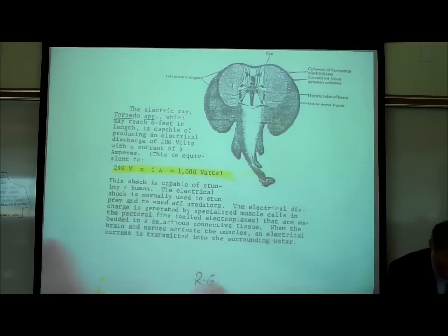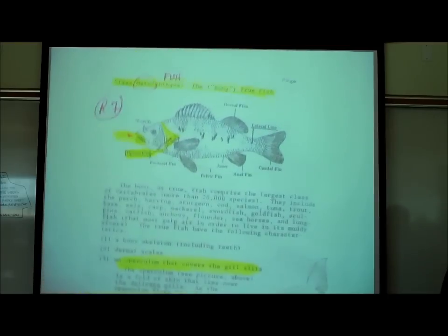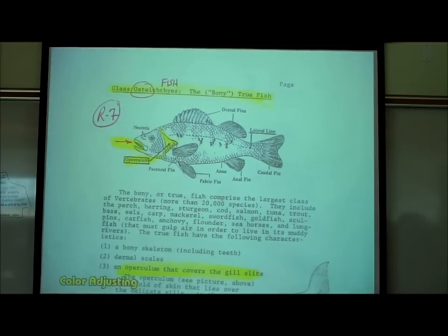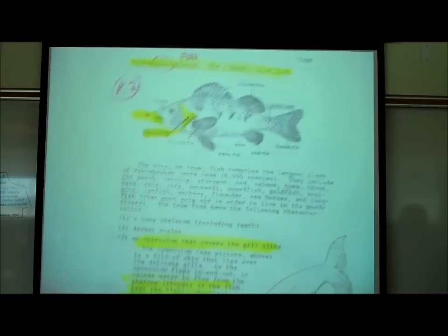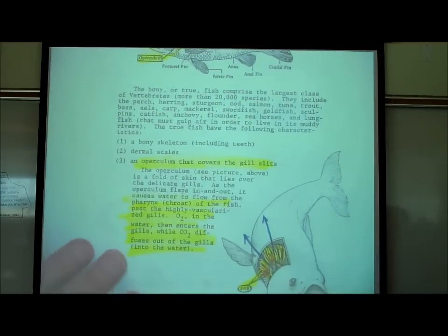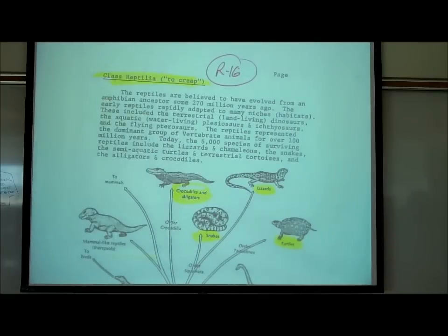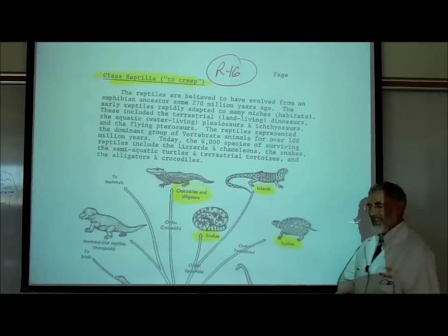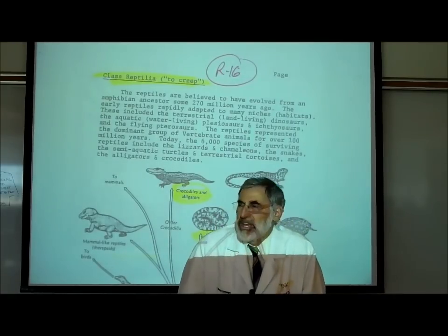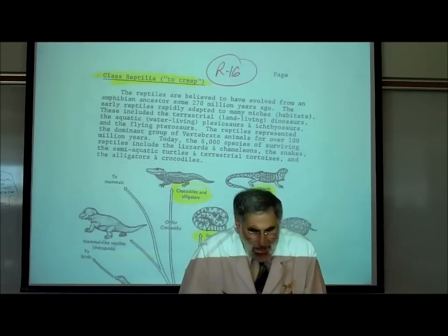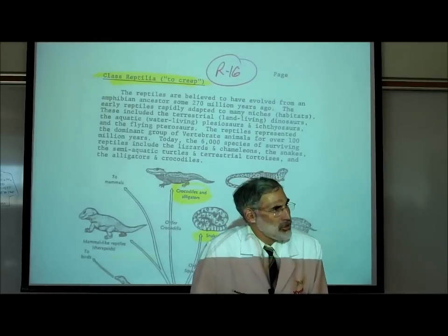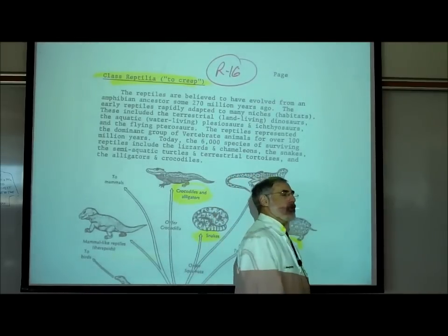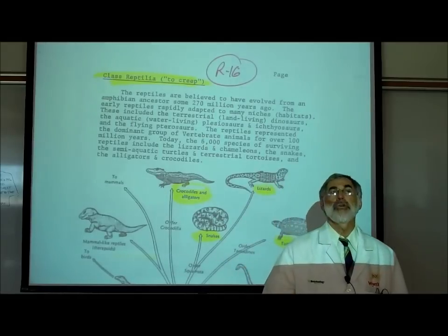On R7, the class of real fish is called Osteichthyes, which literally means bony fish — those are the true fish. They are characterized by having an operculum that covers their gill slits. The vertebrate animals are called that because they have a vertebral column, and they include Chondrichthyes, Osteichthyes, Amphibia, and now what I'm covering: the reptiles.